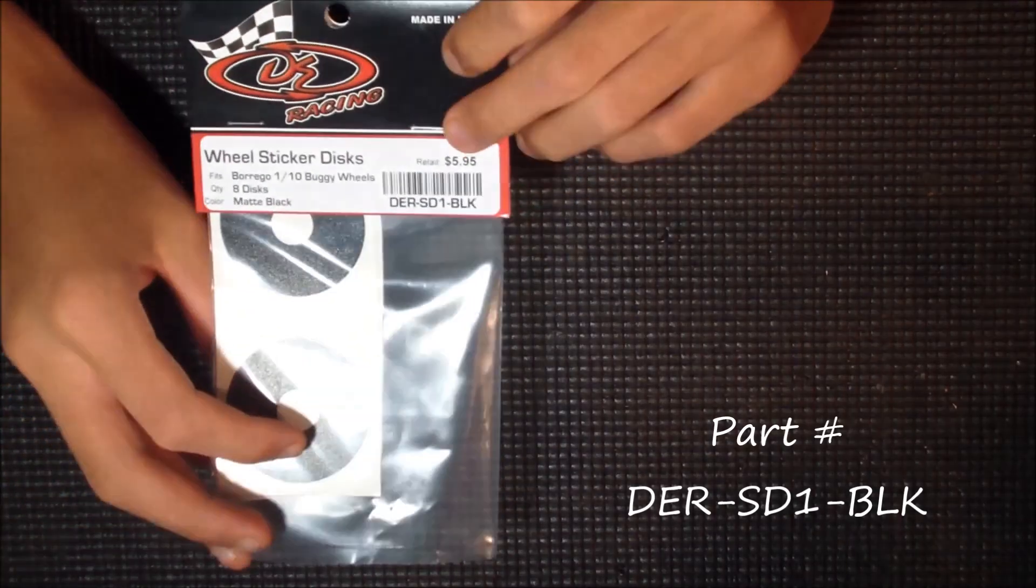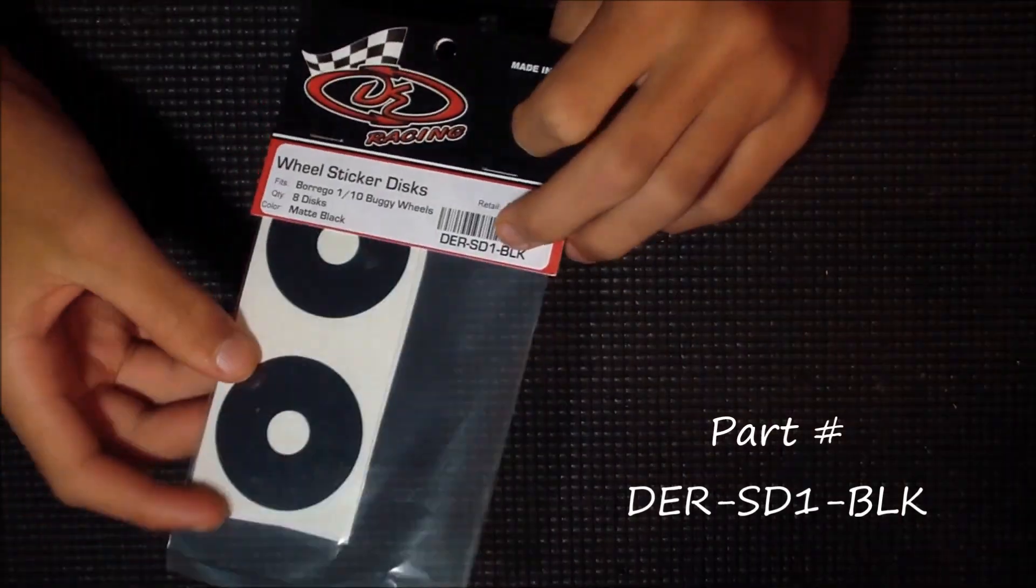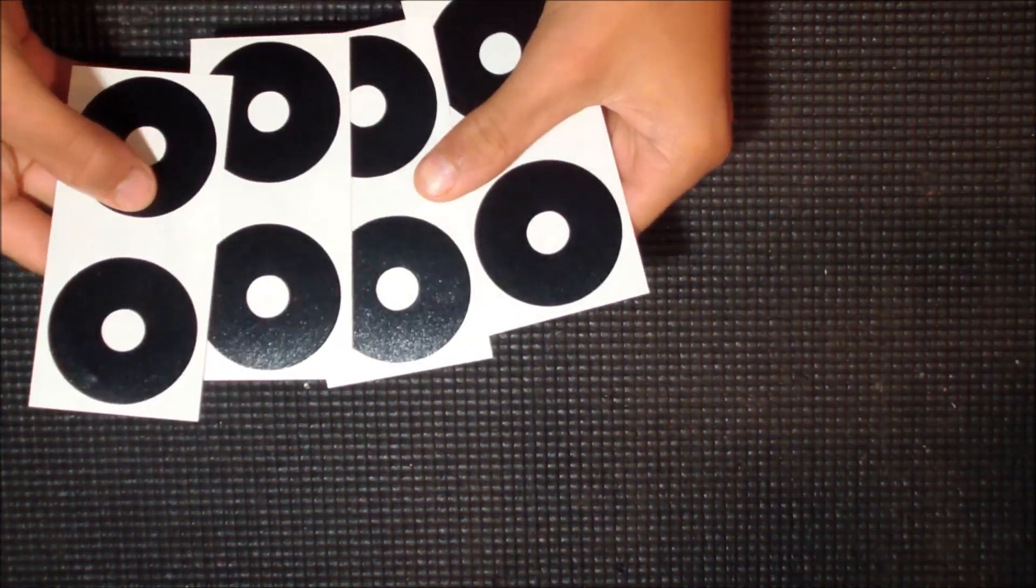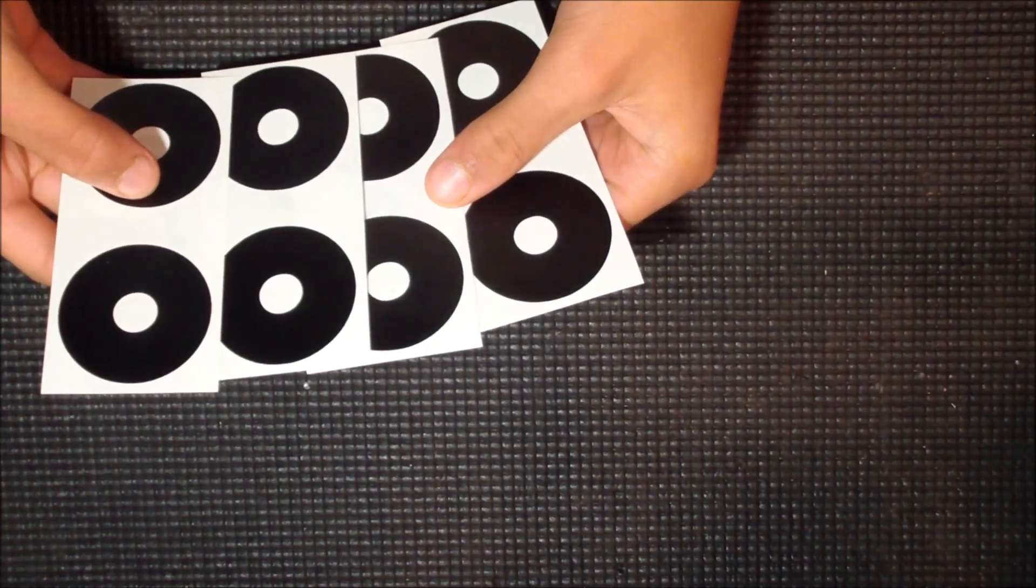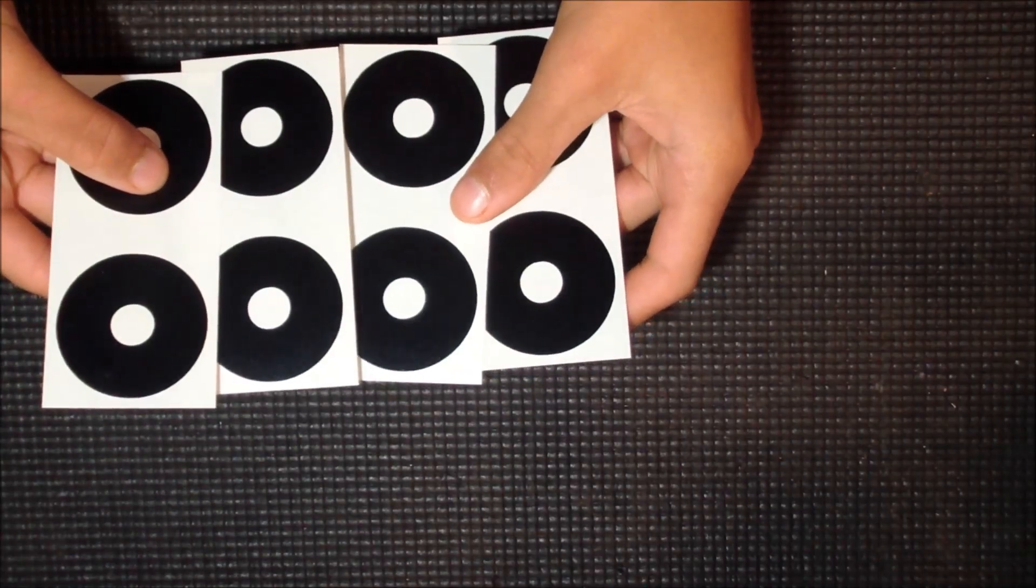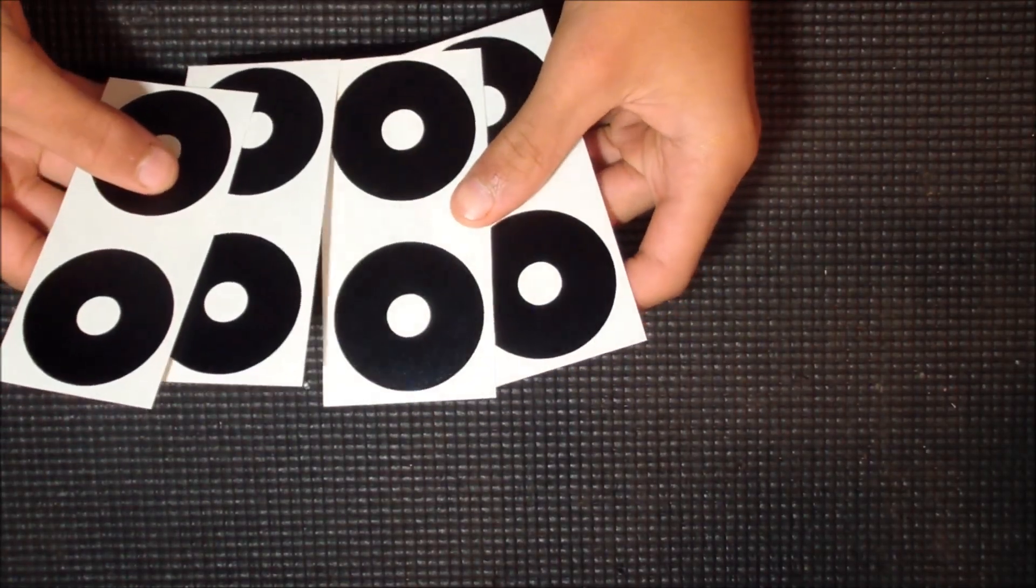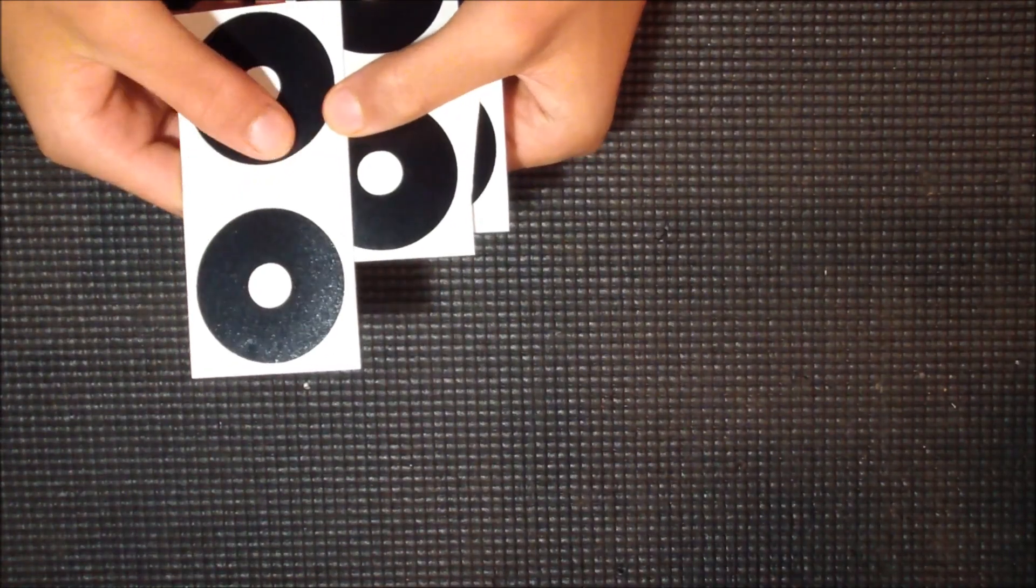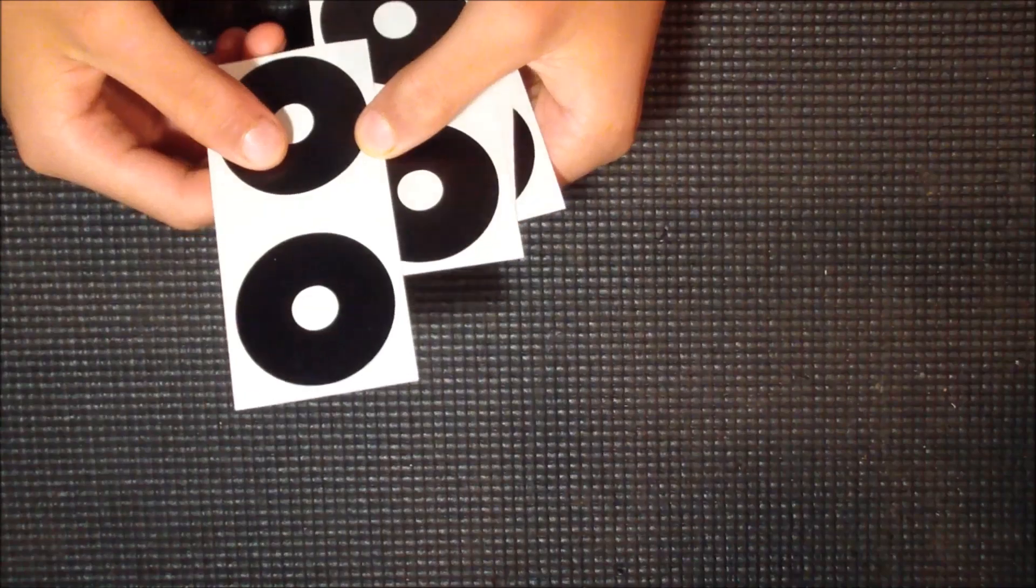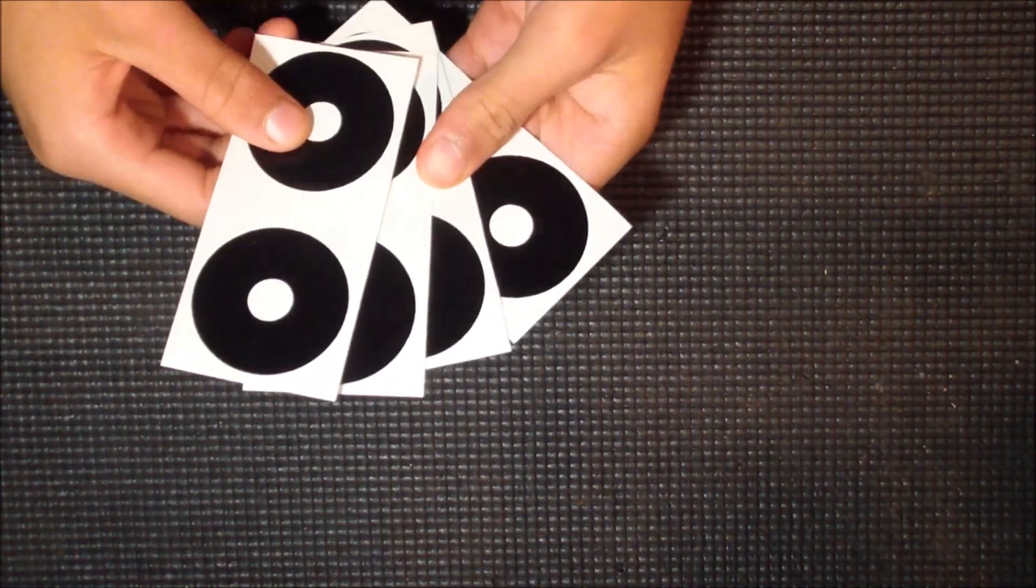And let me show you the stickers real quick. It's not made for the SC wheels, but it's for the buggy wheels in the same 2.2 size, so they will work for the short course wheels. If you open up your DE stickers, your wheel stickers, you get eight, which is pretty cool. So if any get scratched up, you can replace them. Or if you have four sets of wheels, you can just use all four sets. So these are pretty thick vinyl material, they shouldn't get scratched up too bad. It seems like they'll hold up well. So let me get one on there and show you guys what they look like.